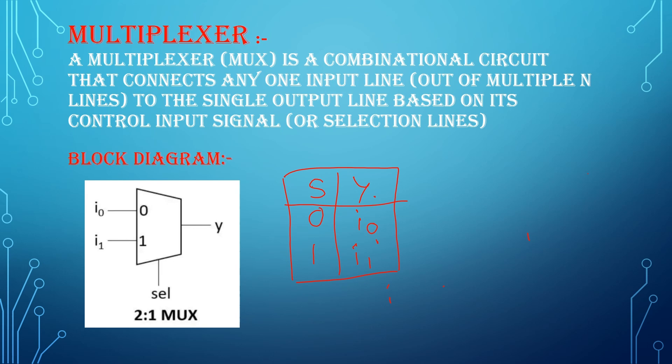From this truth table, we can write logical expression as y is equal to s bar into I0 plus s into I1.